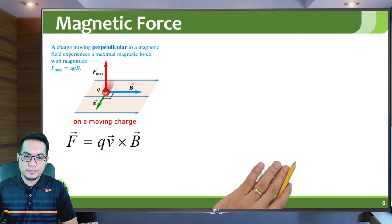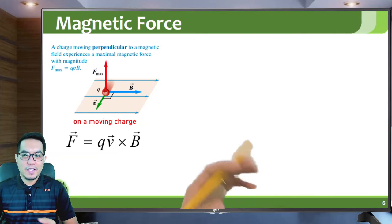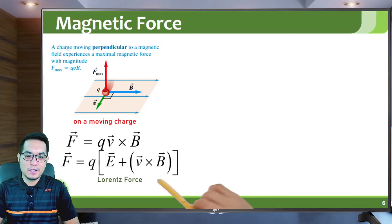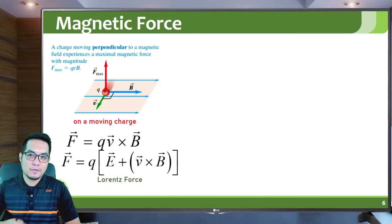If a moving charge is exposed to both an external magnetic field and an external electric field, the total force experienced is what we call the Lorentz force. Basically, qE is the electric force, q v cross B is the magnetic force, and the combination of the two is the Lorentz force — an electromagnetic force.